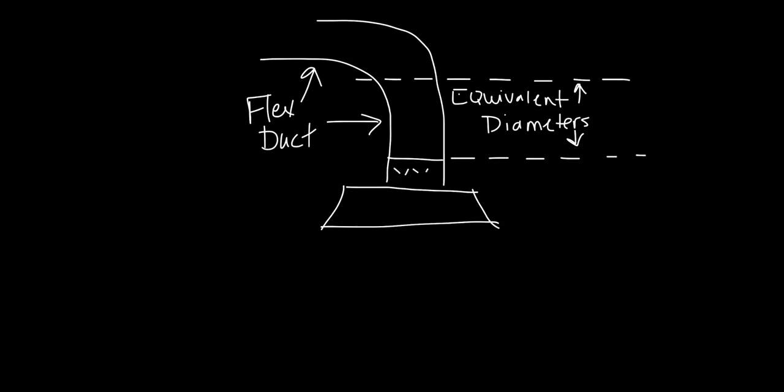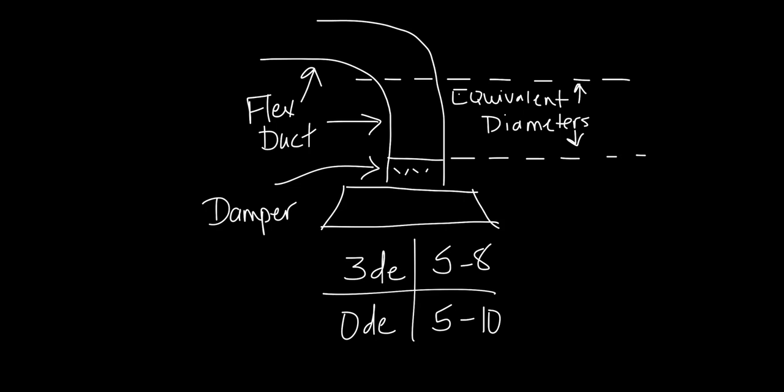The fourth case is exactly like the third case, only an opposed blade damper was added to the installation. At 3 equivalent diameters, it was found that the damper was responsible for adding between 5 and 8 NC to the baseline sound data. When zero equivalent diameters were tested, the sound add was between 5 and 10 NC. It is interesting that in both these cases, the low end of the sound data is the same and only a small difference at the high end.